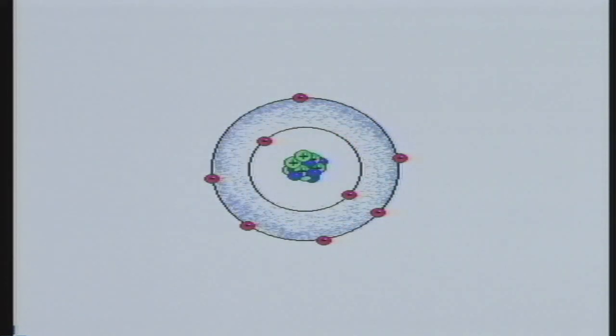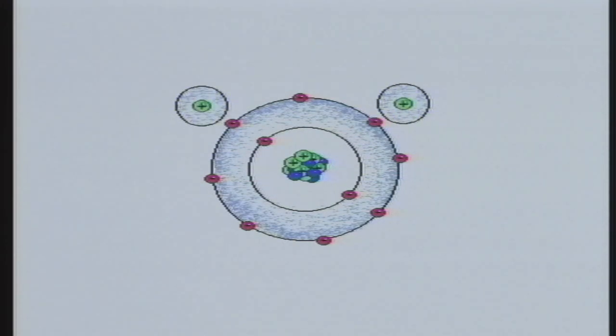An atom becomes stable when there are eight electrons in its outer orbital. The atom shown here is oxygen, which has only six electrons in its outer orbital. If it bonds with two hydrogen atoms, with only one electron each, it will then have eight electrons in its outer orbital and will be stable.